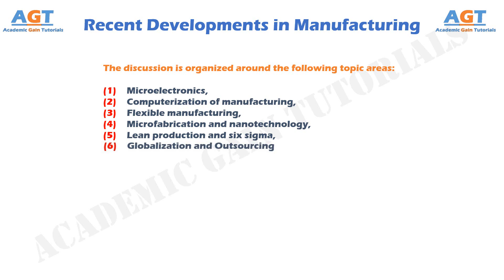A supplier is usually thought of as a company that provides materials and components for a customer engaged in production of a product, whereas a contract manufacturer accomplishes the whole production of the product and may use suppliers itself.